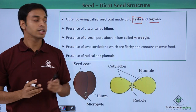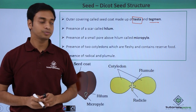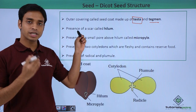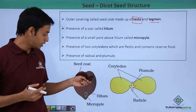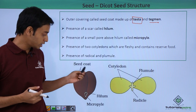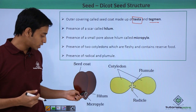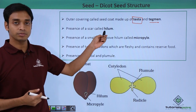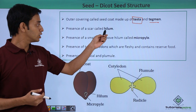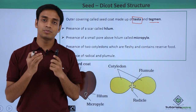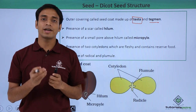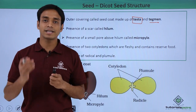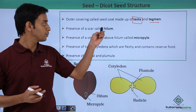There is a presence of a scar on the seeds. You can see this is a typical gram seed — it has a scar, and this scar is known as the hilum. This hilum is actually a point where a developing seed remains attached to the fruit.